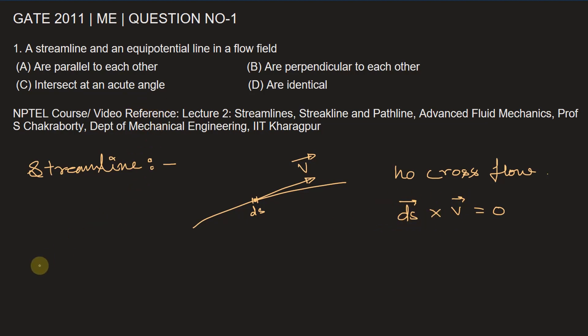The second one is equipotential line. An equipotential line is a line of constant head, or a line along which velocity potential function phi remains constant.